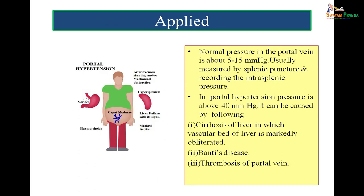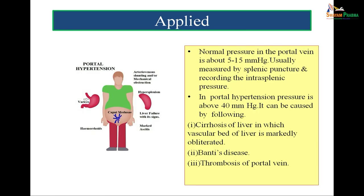The sequelae of portal hypertension include esophageal varices, hemorrhoids, Caput Medusae, and liver failure with its signs. Normal pressure in the portal system is about 5 to 15 mmHg, usually measured by splenic puncture. In portal hypertension, pressure rises above 40 mmHg. This can be caused by cirrhosis of the liver in which the vascular bed is markedly obliterated, Banti's disease which is congestive splenomegaly with premature destruction of RBCs, or thrombosis of the portal vein. All these are reasons for portosystemic channels to open up.